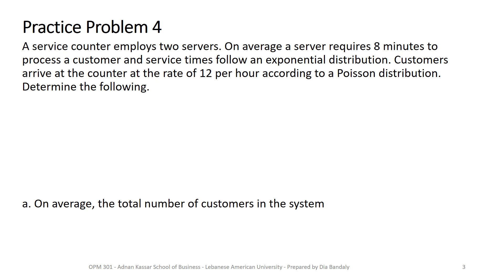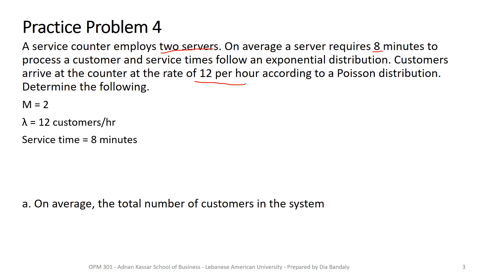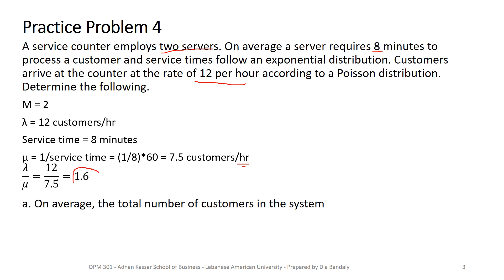A service counter employs two servers. On average a server requires 8 minutes to process a customer — this is the service time, which follows an exponential distribution. Customers arrive at a rate of 12 per hour. Identifying parameters: m = 2, lambda = 12 per hour. Service time is 8 minutes, so mu = 60/8 = 7.5 per hour. Lambda/mu = 1.6.